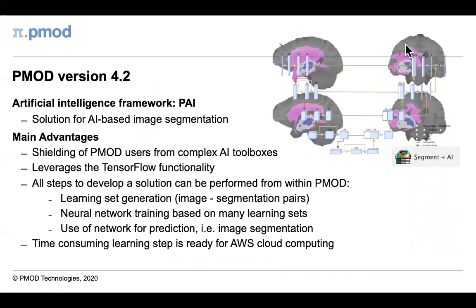In PMOD version 4.2, we're adding an exciting artificial intelligence framework to our segmentation tool PSEG. This shields users from complex AI toolboxes while leveraging TensorFlow functionality. All steps for machine learning segmentation can be performed within PMOD: generating learning sets by processing images and creating segmentation pairs, training the neural network on those learning sets, and using the network for prediction — that is, image segmentation — as shown in the top right for brain tumour segmentation.